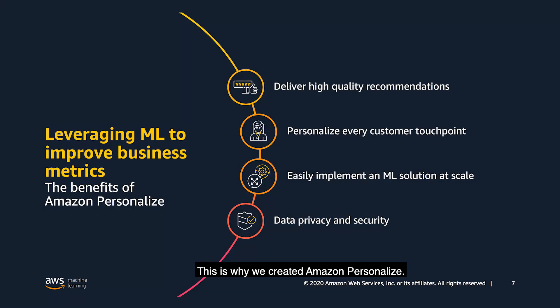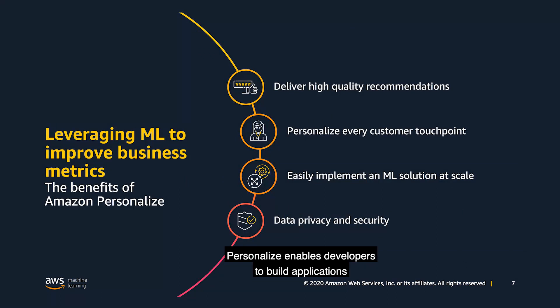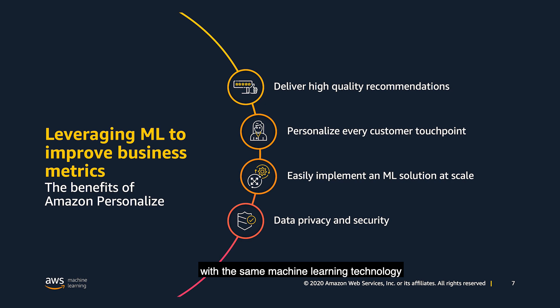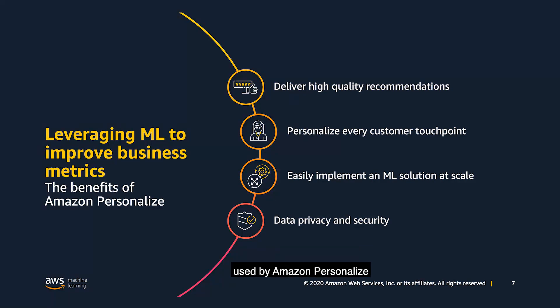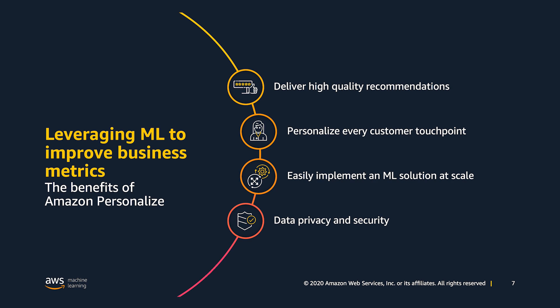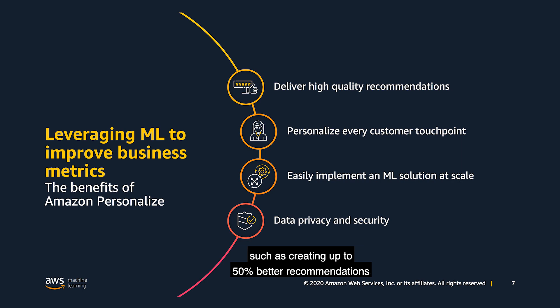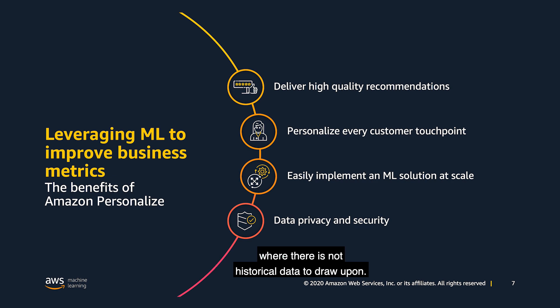This is why we created Amazon Personalize. Personalize enables developers to build applications with the same machine learning technology used by Amazon.com for real-time personalized recommendations — and the best part is that no machine learning expertise is required. Amazon Personalize provides several key benefits. The proprietary machine learning algorithms create higher quality recommendations that respond to specific needs, preferences, and changing behavior of your customers. They are also designed to address complex problems, such as creating up to 50% better recommendations for new users, products, and content where there is no historical data to draw upon.